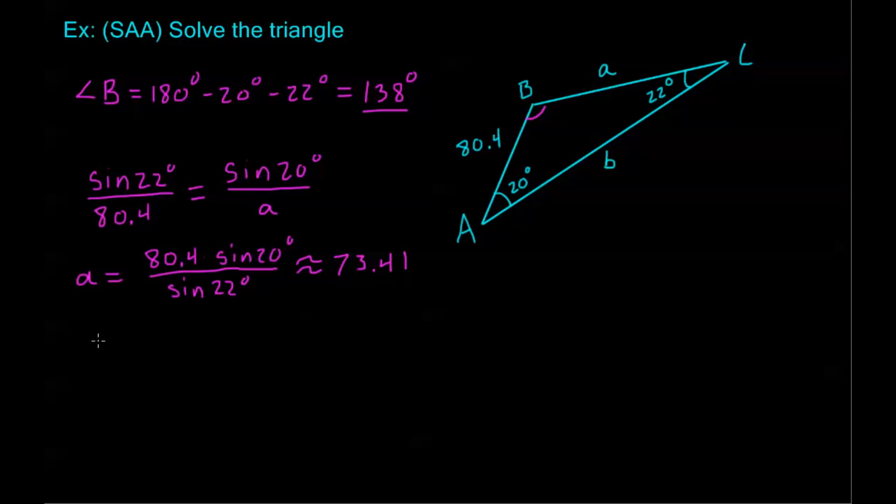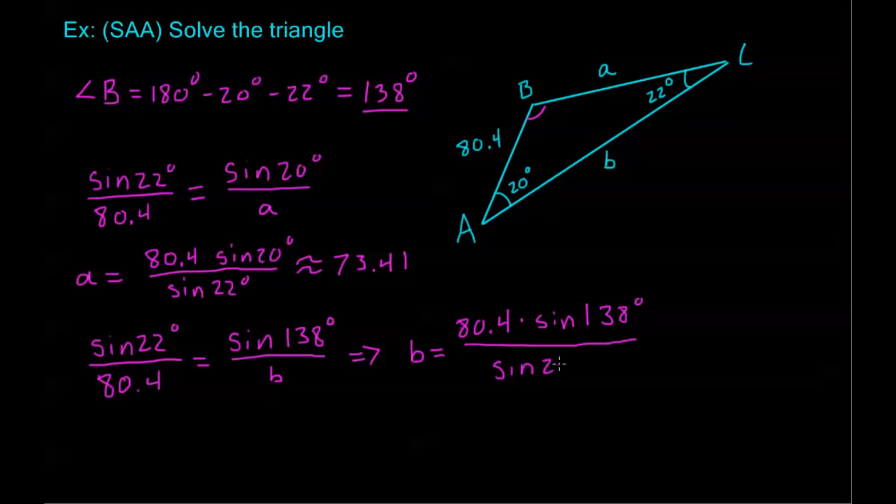And solving for side b, we're going to do this similarly. We'll still use sine of 22 degrees over 80.4. This is equal to sine of angle B. We found angle B to be 138 degrees over side b. Now, solving for my side b, this gives me that b is equal to 80.4 times sine of 138 degrees divided by sine of 22 degrees. And plugging that into our calculator, again, make sure you're in degree mode for this problem. So, that's going to give me about 143.61. And that's it.